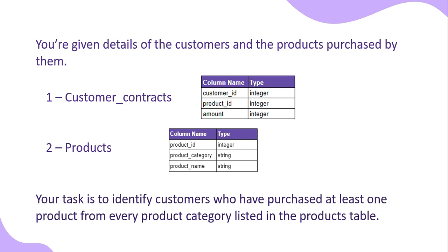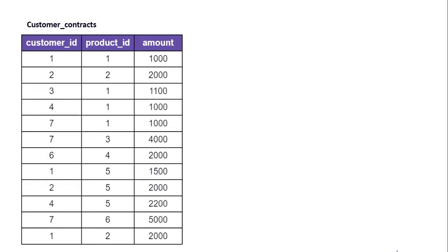In the customer contracts table we have three columns: customer ID, product ID, and amount. The customer ID is the ID of the customer, product ID is the ID of the product the customer purchased, and amount is what the customer paid to purchase the product.